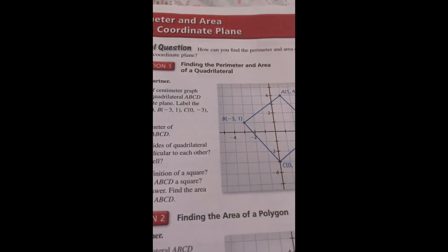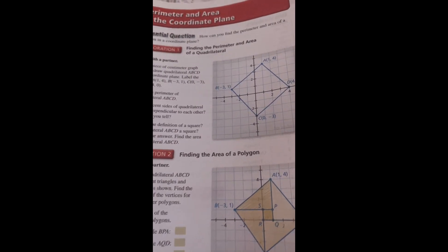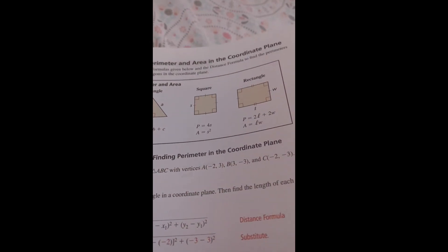1.4 Perimeter and Area in the Coordinate Plane. Looking for Structure: To be proficient in math, you need to visualize single objects as being composed of more than one object. Remember: perimeter has linear units such as feet or meters. Area has square units such as square feet or square meters. Reading: You can read the notation ABC as triangle ABC.